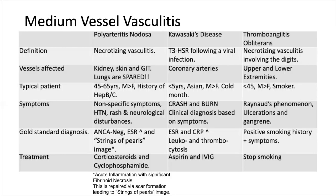Buerger's disease is a necrotizing vasculitis involving the digits. It is primarily due to disruption in tibial and radial arteries caused by an immune reaction to tobacco extracts. Thus cessation of smoking is the best treatment for this disease.